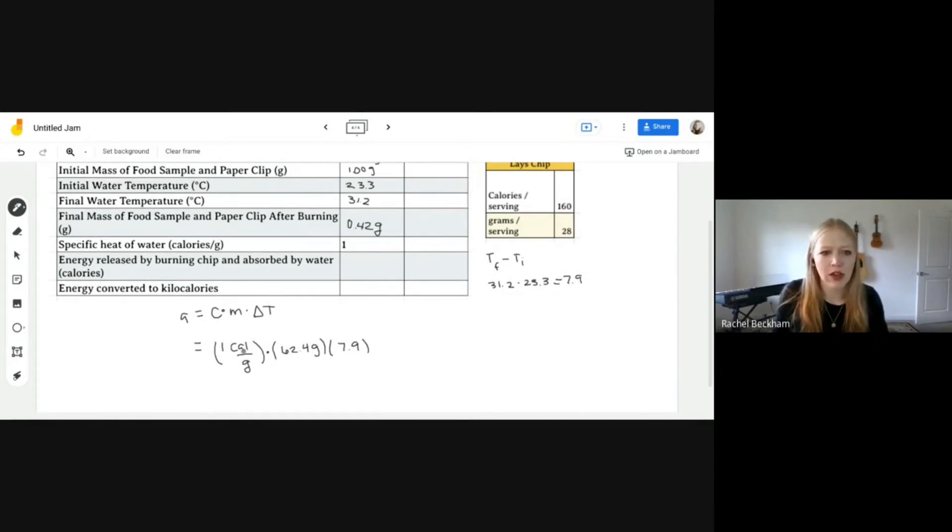And now we just need to multiply all of that. But just as a side note, you can see what units cancel out. Our grams here is on the bottom and our grams here is on top. So grams divided by grams is going to just cancel out. So the unit that we're left with is calories, which is what we want. So now we're going to do one times 62.4 times 7.9. And I'm getting 492.96. And this is how many calories were in our sample.